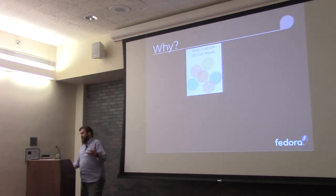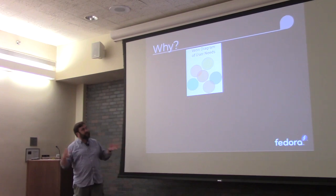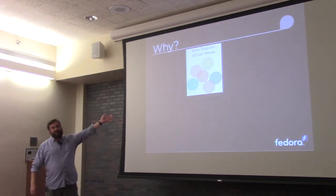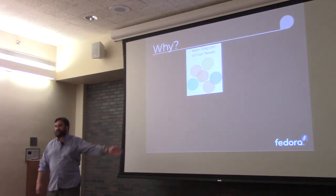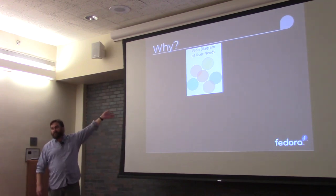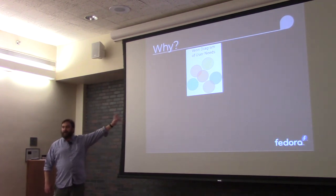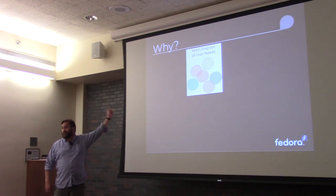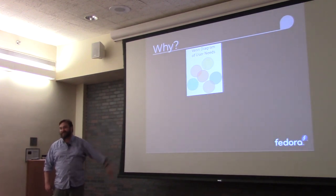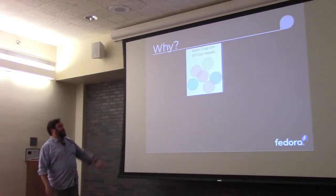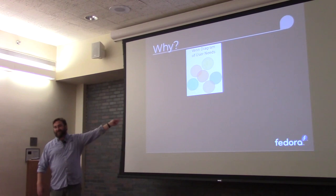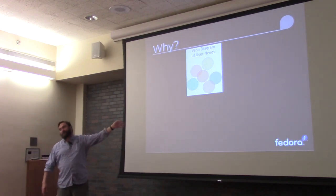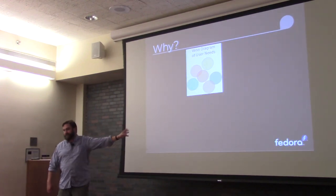Our operating system users — this is the Venn diagram of their user needs. How is this different from many Venn diagrams? There's no bloody overlap. Occasionally you get two people who agree on something, but they're secretly in a room and nobody tells anybody.